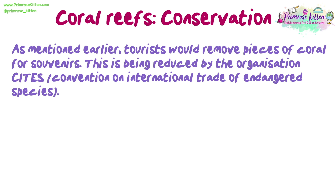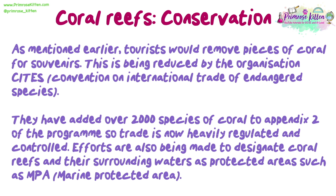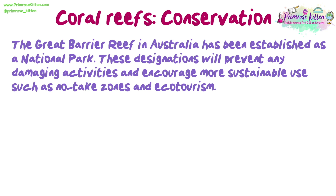As mentioned earlier, tourists would remove pieces of coral for souvenirs. This is being reduced by the organisation CITES — the Convention on International Trade of Endangered Species. They have added over 2,000 species of coral to Appendix 2 of the programme, so trade is now heavily regulated and controlled. Efforts are also being made to designate coral reefs and their surrounding waters as protected areas, such as MPAs — Marine Protected Areas. The Great Barrier Reef in Australia has been established as a national park. These designations will prevent any damaging activities and encourage more sustainable use, such as no-take zones and ecotourism.